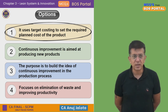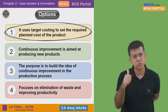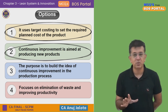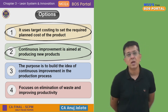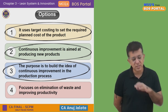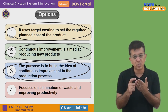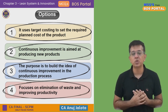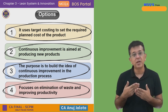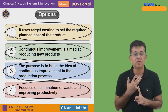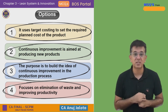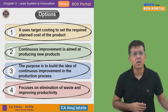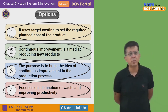Now analyzing each option: Point 1 — 'it uses target costing to set the required planned cost' — this is CORRECT, because under Kaizen Costing you do set targets to bring down cost. Point 2 — 'continuous improvement is aimed at producing new products' — NO, the aim is to cut down costs on whatever products you're already producing through small incremental changes. Point 3 — 'the purpose is to build the idea of continuous improvement in the production process' — this is CORRECT, and is exactly what Kaizen Costing is about. Point 4 — 'focuses on elimination of waste and improving productivity' — CORRECT, reducing material waste, idle labor, idle machines all help bring costs down.